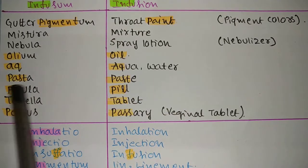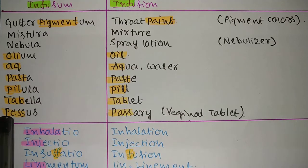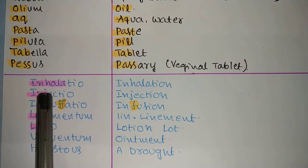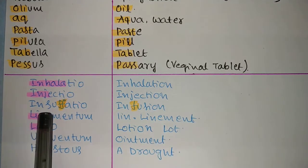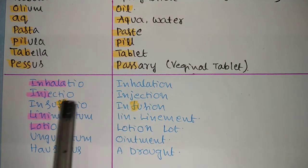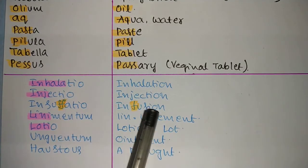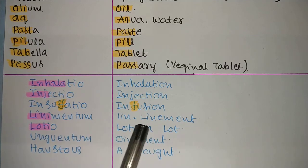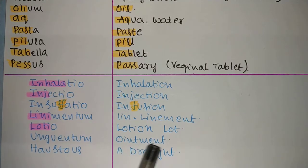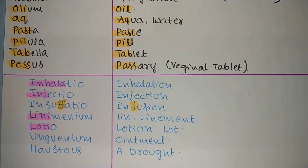'Aqua' means water. 'Pasta' means paste. 'Pilula' means pills. 'Tabella' means tablet. 'Pessus' means a vaginal tablet. 'Inhalatio' means inhalation — very easy. 'Injectio' means injection. 'Insufflatio' — note the double F — means insufflation, so do not confuse it with infusion. 'Linimentum' means lotion. 'Unguentum' means ointment. 'Haustus' means a draught. Thank you, subscribe the channel, and all the best for your exams.